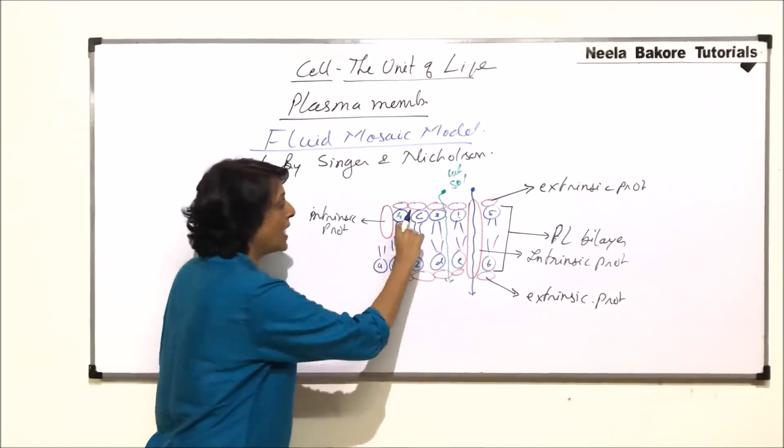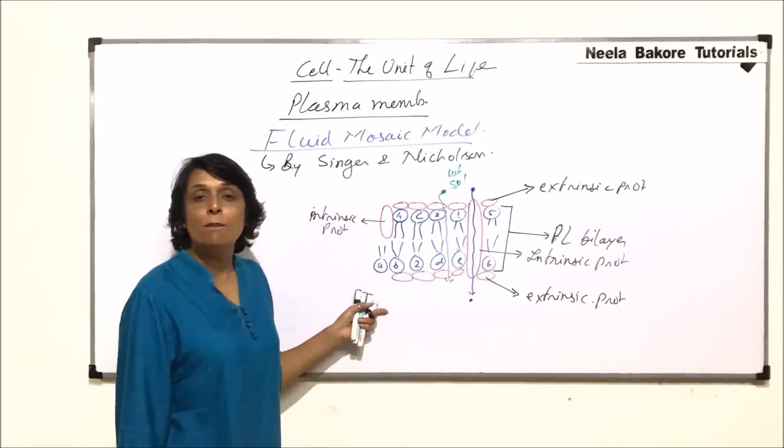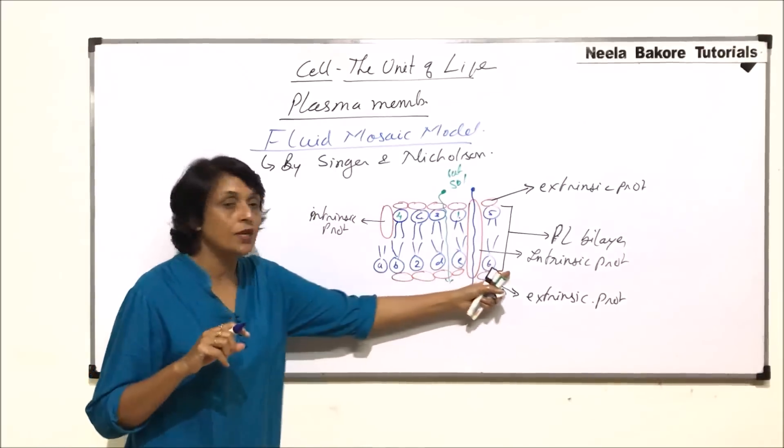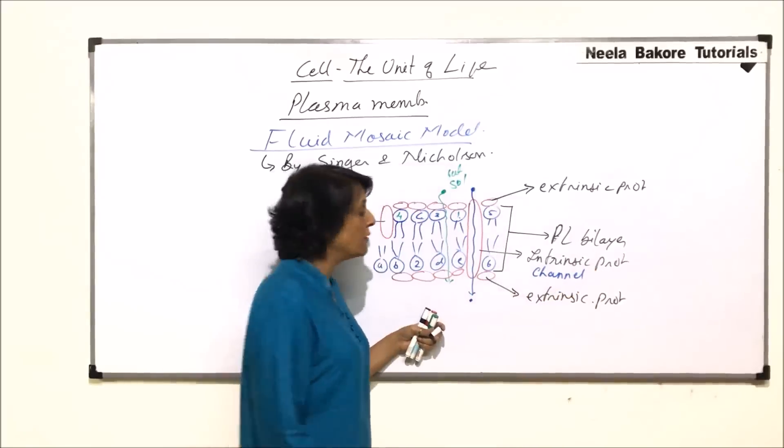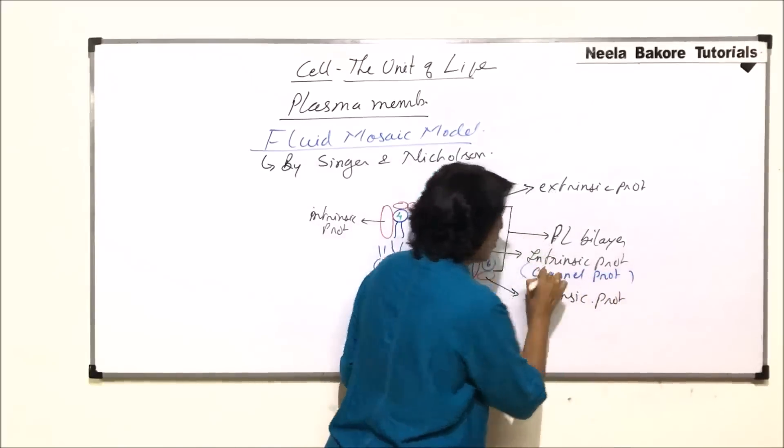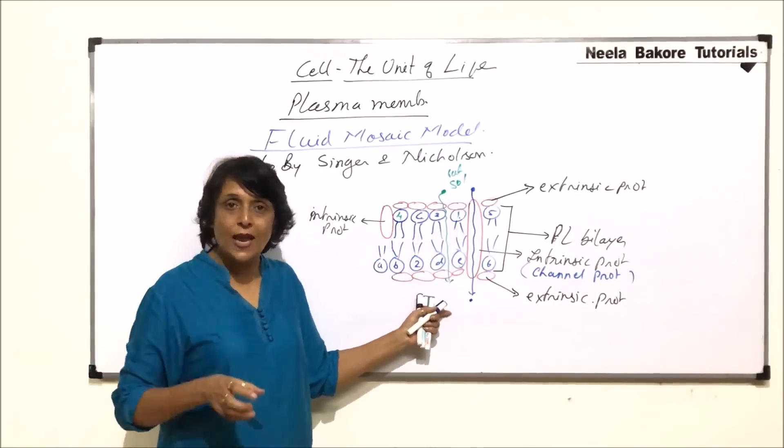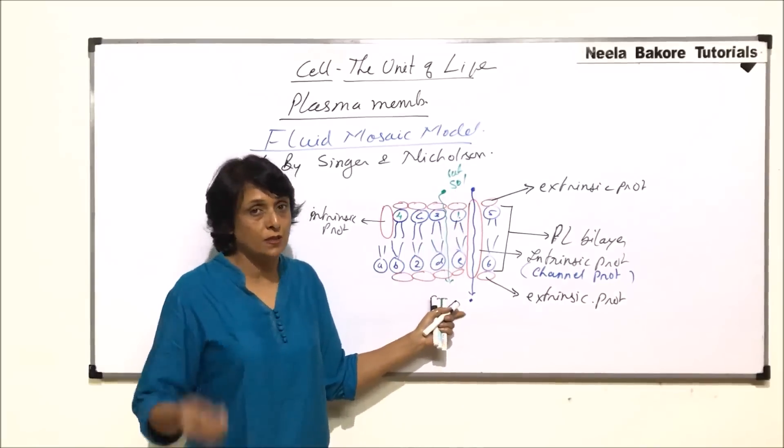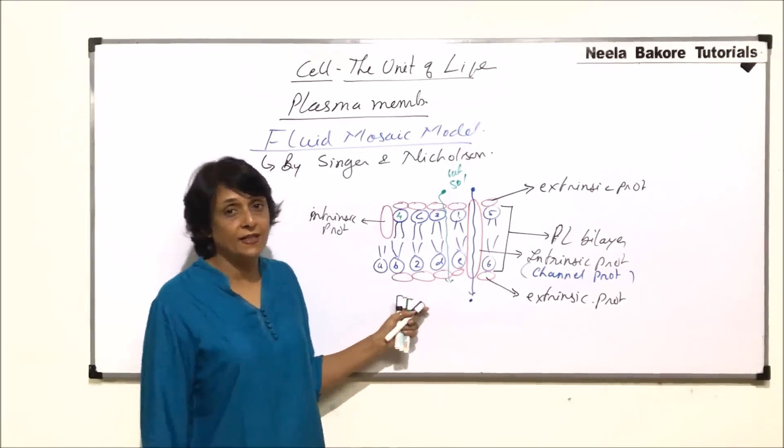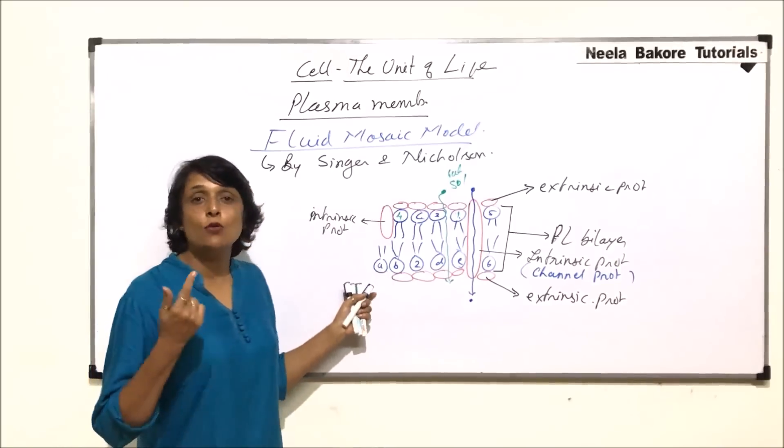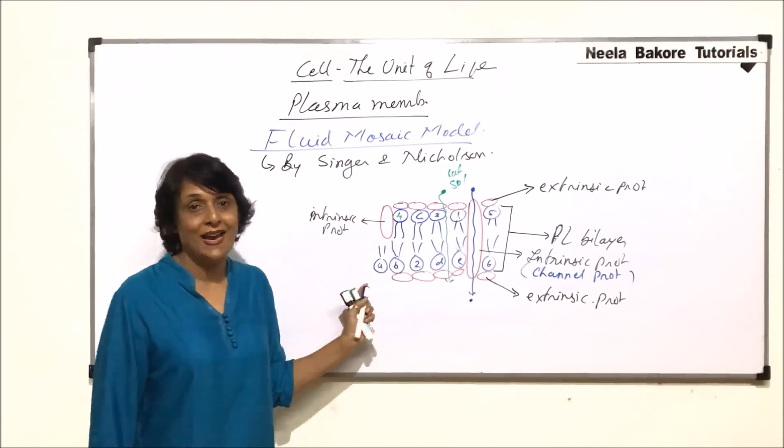Protein was not creating any problem for water movement. The problem was created by this hydrophobic tail part. So water soluble substance comes in. That means this completely embedded protein or intrinsic protein is acting as a channel. The name given to this is channel protein. It is helping as a channel for the entry of water soluble substances. The first problem has been solved or explained by this membrane. The membrane allows fat soluble substances as well as water soluble substances to come in. So first point has been explained.